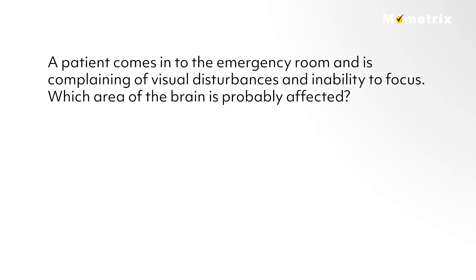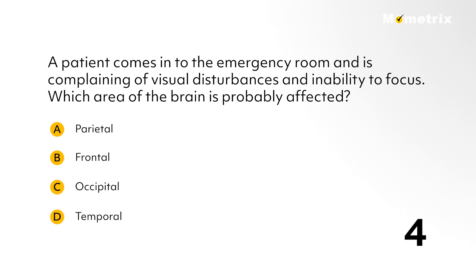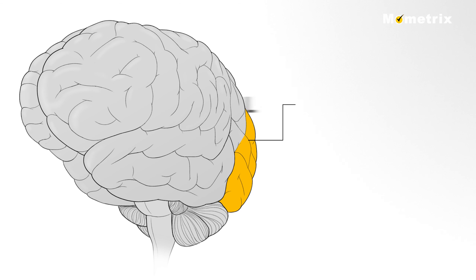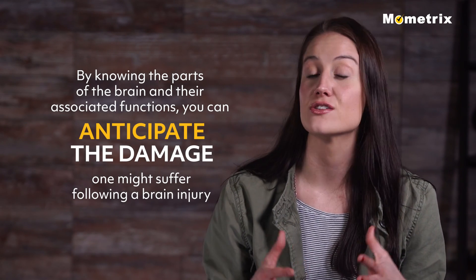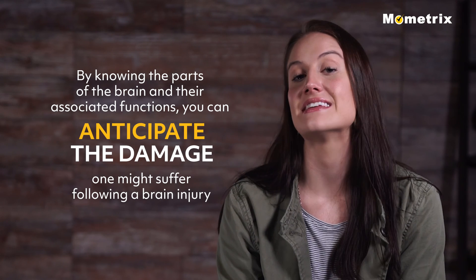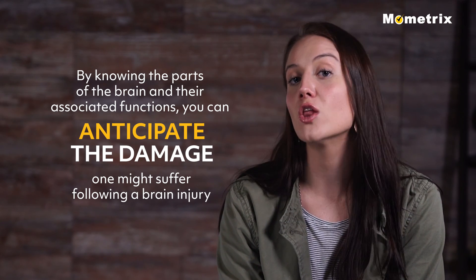Question 2: A patient comes into the emergency room and is complaining of visual disturbances and inability to focus. The correct answer is C. The occipital lobe of the brain is responsible for processing visual information. By knowing the parts of the brain and their associated functions, you can anticipate the damage one might suffer following a brain injury.